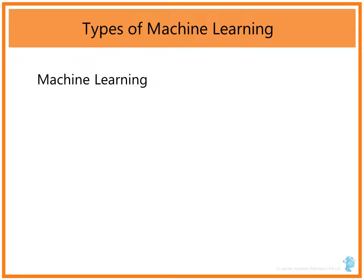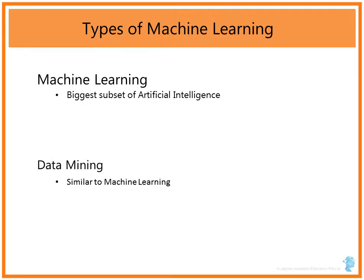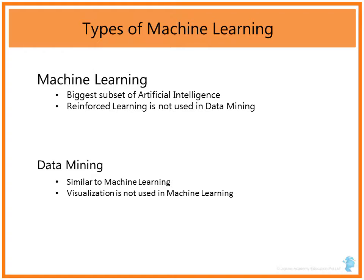A question that often comes up is: what is the difference between data mining, machine learning, and artificial intelligence? Machine learning is actually the biggest subset of artificial intelligence. Data mining and machine learning are almost the same, depending on whom you are asking. There are certain areas in data mining, like visualization, which are not much used in machine learning, and certain aspects of machine learning, like reinforcement learning, which are not much used in data mining. So they are almost complementary to each other.